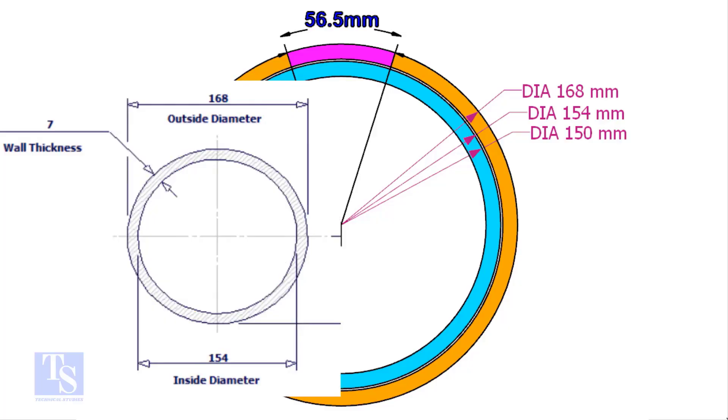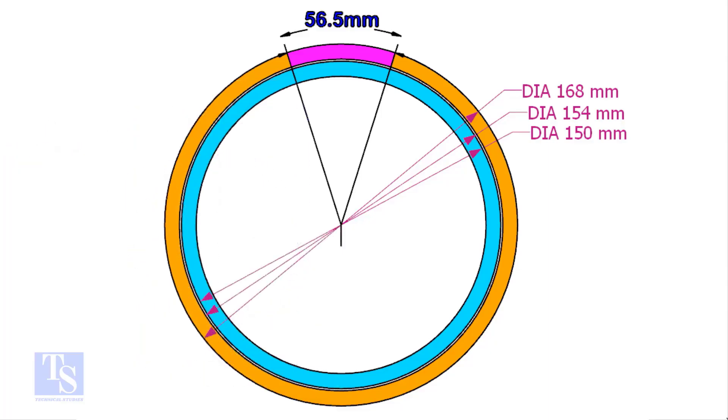The inside diameter of a 6 inch schedule 40 pipe is 154mm. The outer diameter of the clamp should be 4-5mm less than the pipe inside diameter. In this case, the clamp outside diameter is 4mm smaller than the inside diameter of the 6 inch pipe.